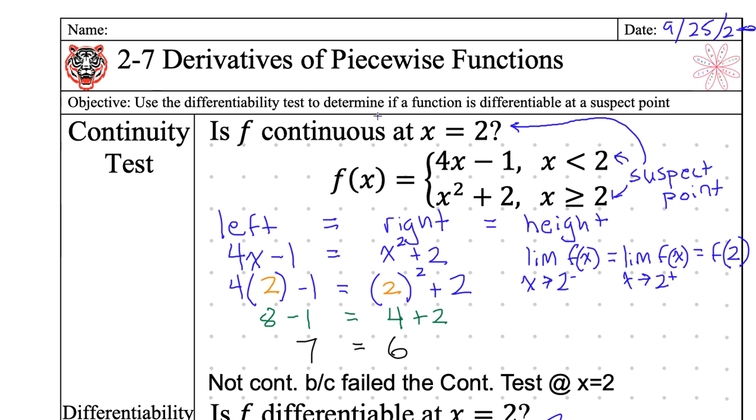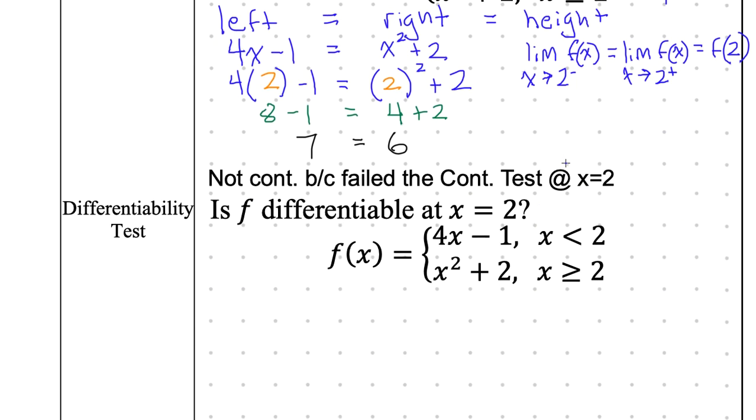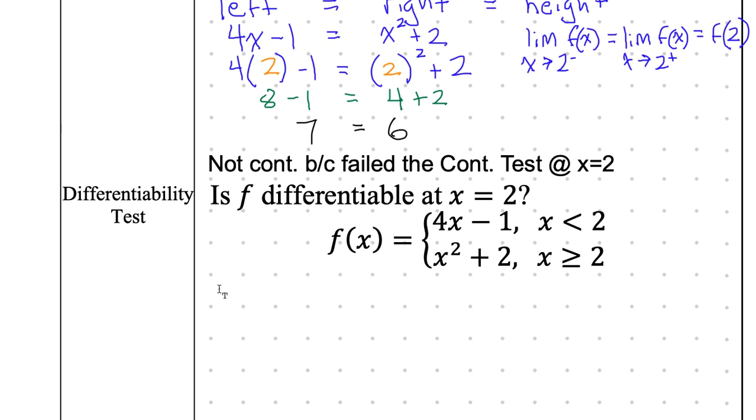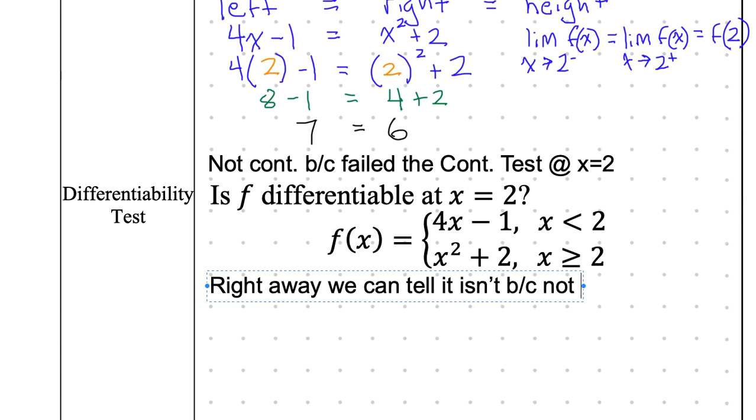Discontinuity, so it can't be differentiable. Like we proved it up here, it is discontinuous at this point, x is equal to 2. So, I'll put in our notes here. Right away, we can tell it isn't. Why? Because not continuous. But, let's go ahead and say we didn't know that. Maybe it was continuous. How would you do the differentiability test? You'd do the following. You'd actually have to take the derivative.